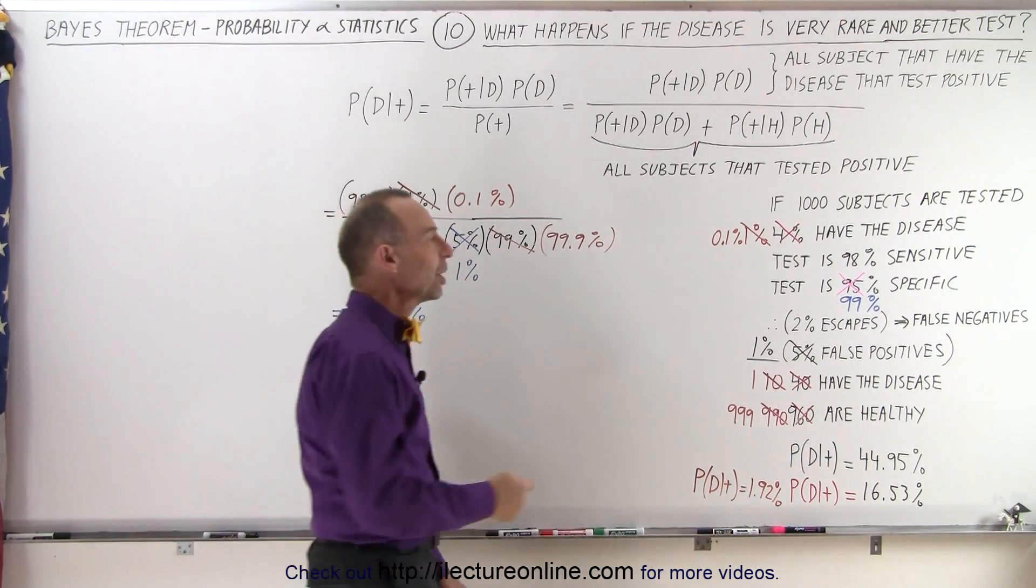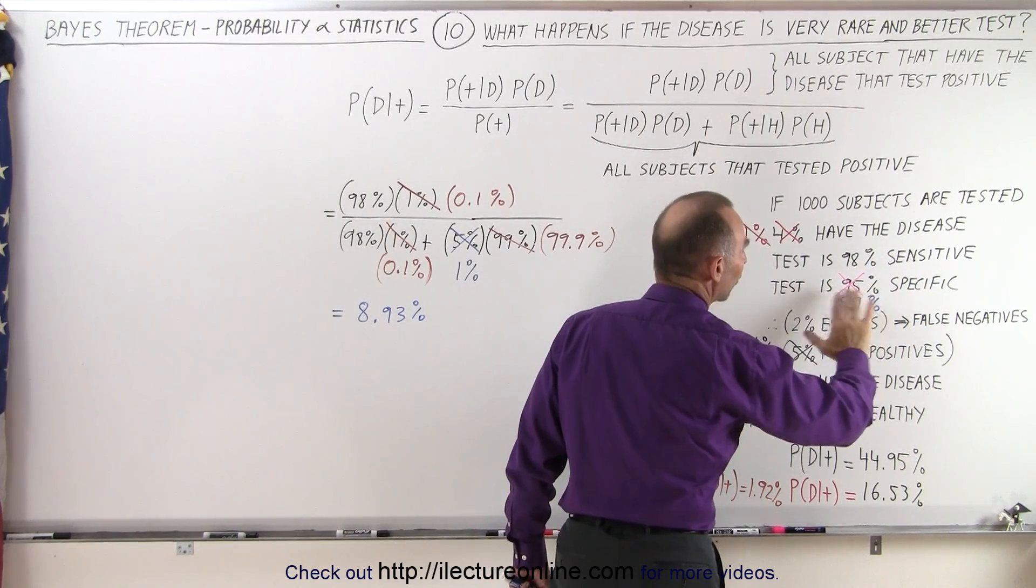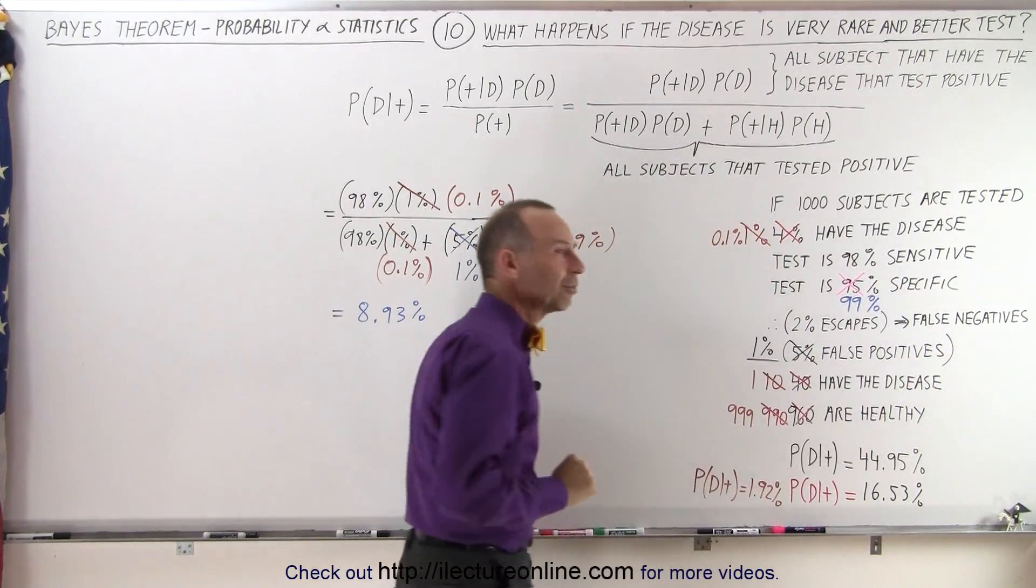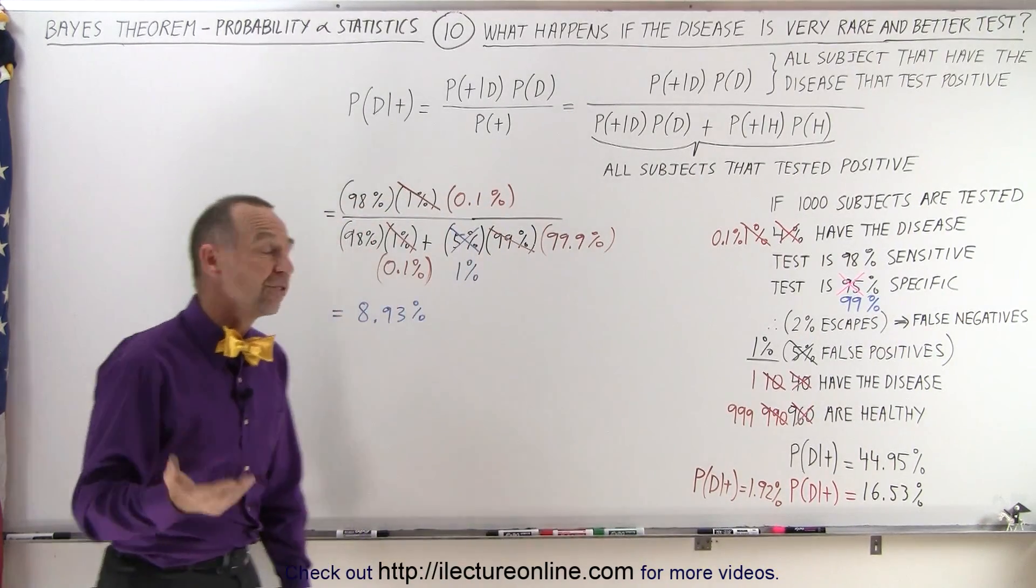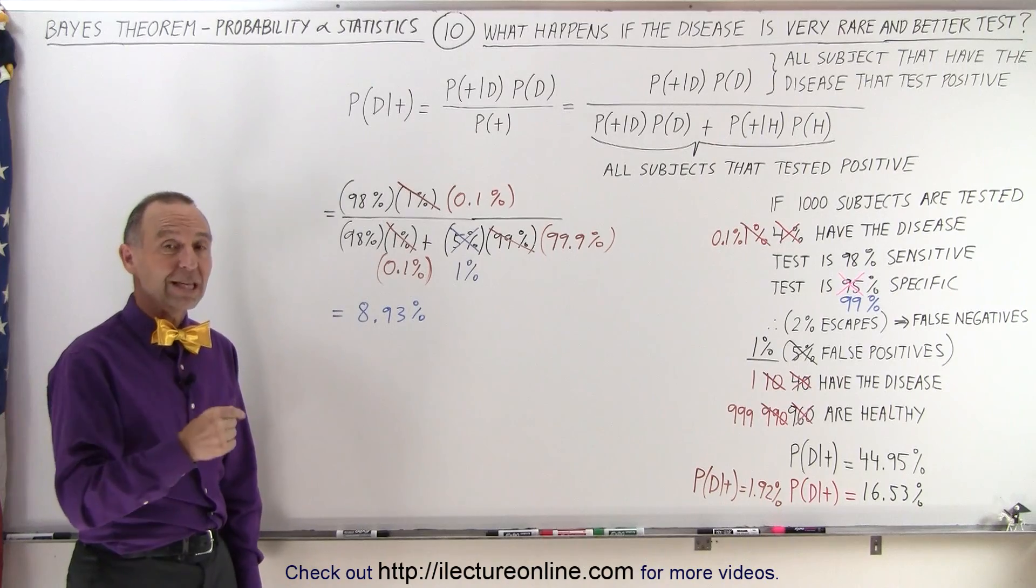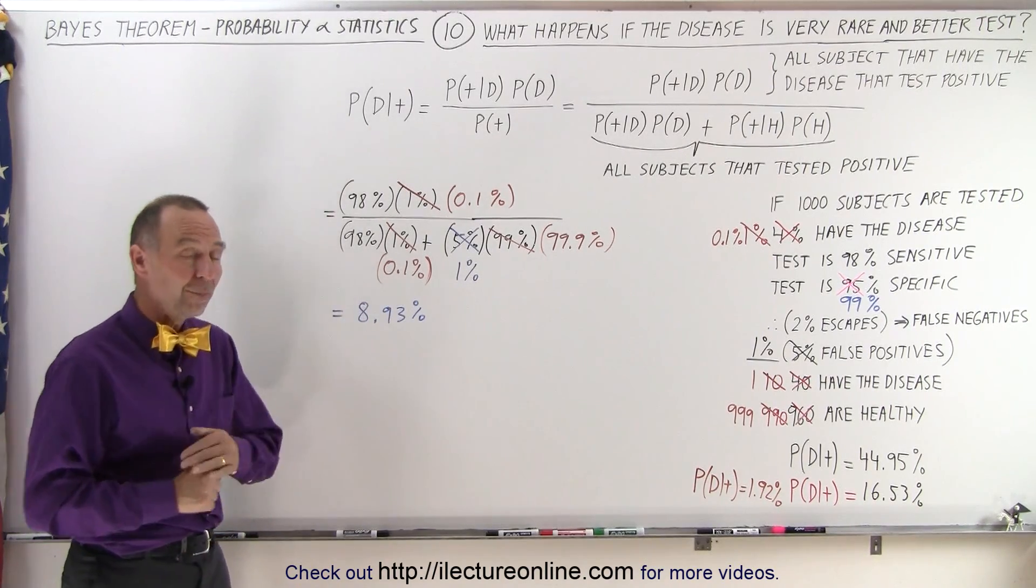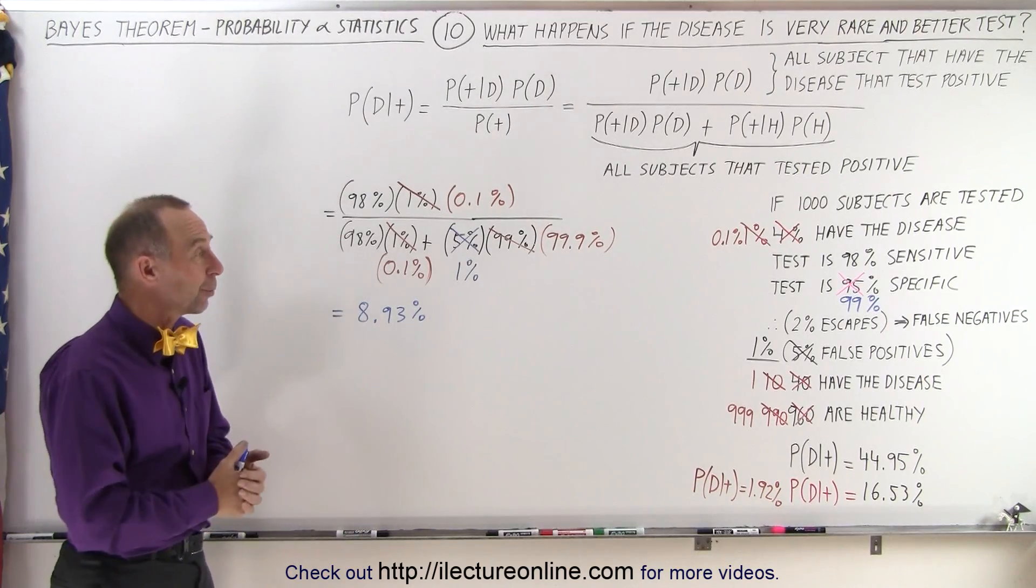And so that's the key to any test. You want that specificity to be as large as possible. In other words, as few false positives as possible. The more false positives your test has, the lower the probability that the result will indicate you do actually have the condition you're looking for.